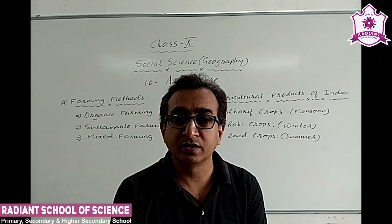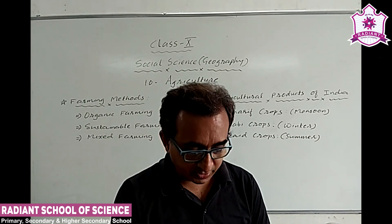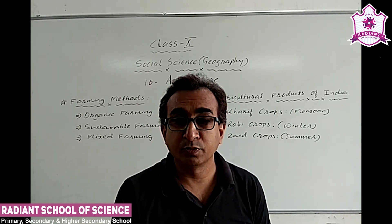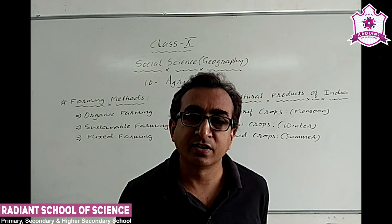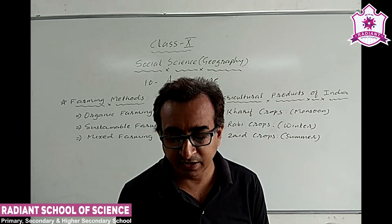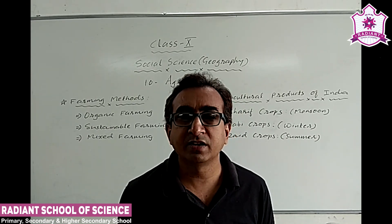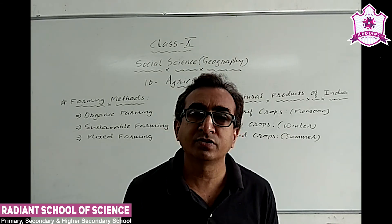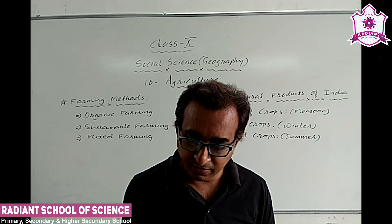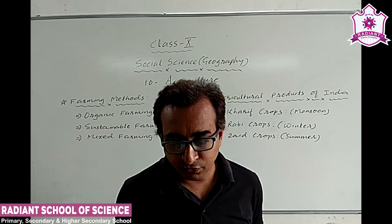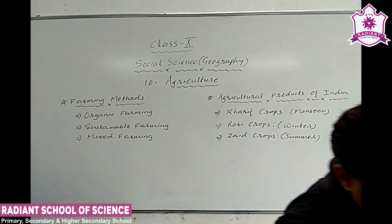So mainly three types of crops grow in India — Kharif, Rabi, and Zaid — and we have done a brief analysis of all three. The next topic is major agricultural crops of India, which is a fairly large topic and will be studied in the next lecture. Thank you very much for your time.